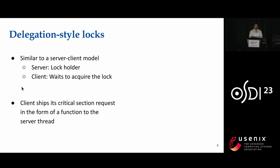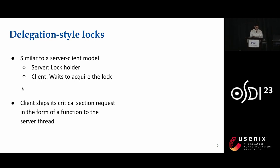Alternative lock designs have been proposed in which we ship the critical section instead of shared data. These lock designs are called delegation-style locks, which work similar to a server-client model. We have a server thread, which is the lock holder, and the other threads trying to acquire the lock become clients. The client ships its critical section request in the form of a function to the server thread.